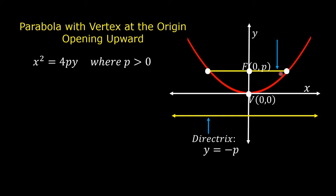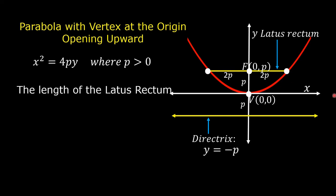This yellow segment is the latus rectum of the parabola. The distance of the focus from the vertex is p, and the distance of the directrix from the vertex is also p. The distance from the focus to one endpoint of the latus rectum is 2p, and to the other endpoint is also 2p. So the length of the latus rectum equals the absolute value of 2p plus 2p, or the absolute value of 4p.